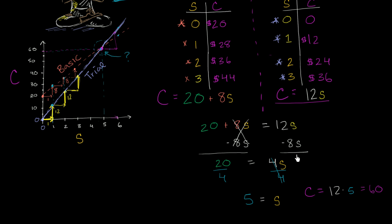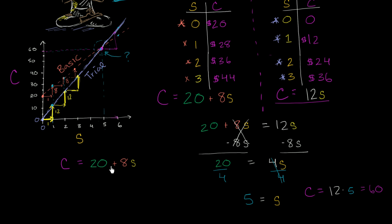But the guy says, I have a different way of doing it, and I'm curious to see if I'm going to get the same answer. His way of thinking about it — look at this right here. We know from our basic plan that the total monthly cost is going to be equal to $20 upfront plus $8 per session times the number of sessions. The whole thing we wanted to think about is at what number of sessions do we get the same cost for both the basic and the trial plan? He says, I have an idea of turning this into an equation of only one unknown. Right now it's an equation of two unknowns — I have a certain cost that's dependent on a certain number of sessions. But he thinks he's got a way of getting rid of the c.